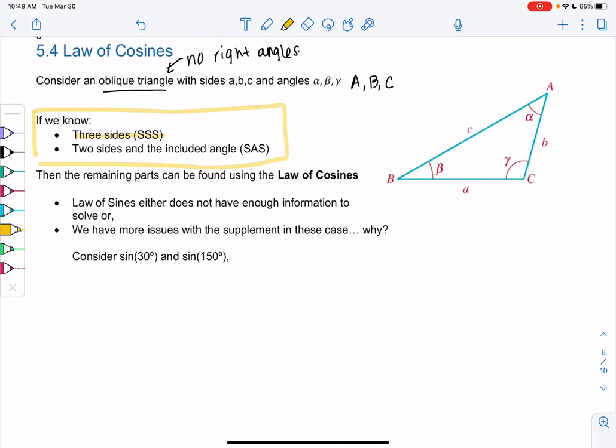Or we know two sides and the included angle. So when I say that, that means we know as we go around the triangle, we know a side, angle, side. So this is the included angle. It's the angle in between.